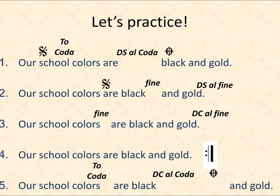Line three is the DC Al Fine — there's no Segno, it goes back to the very beginning. We do the whole thing once, because until we're told to look for the Fine, we ignore it. Then we go back to the beginning, Da Capo, and simply stop at Fine. So line three reads: our school colors are black and gold — our school colors.